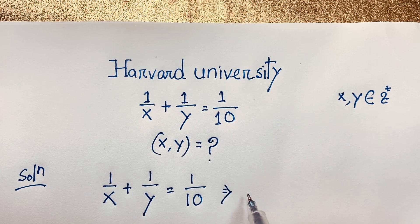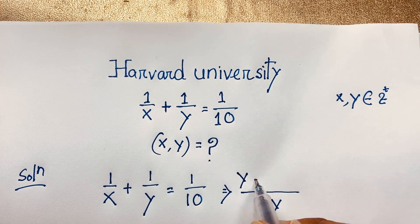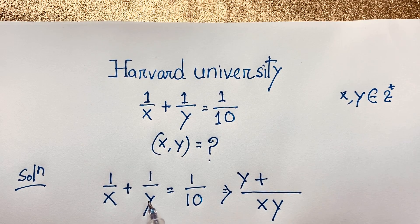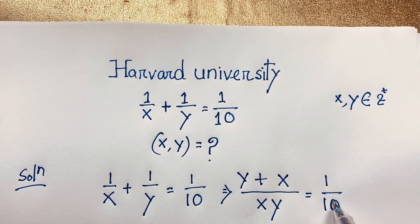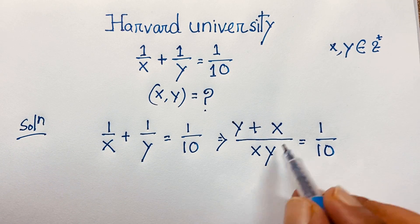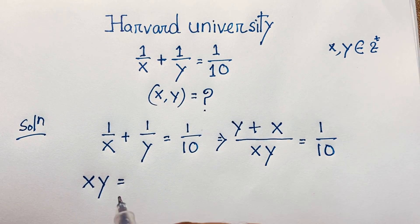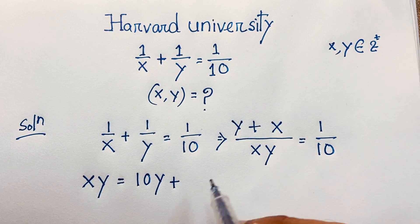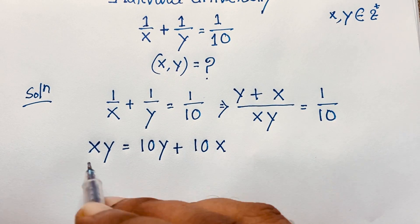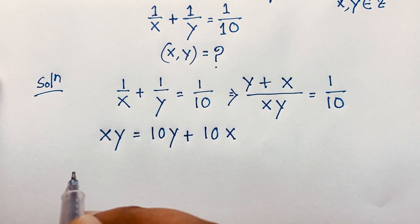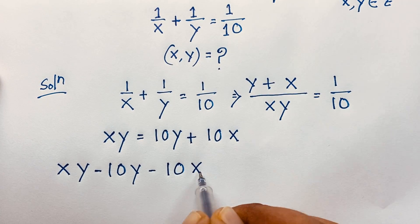Now you can see the least common denominator is xy. So xy divided by x gives y, and y times 1 is y. And xy divided by y gives x, and x times 1 is x, equal to 1 over 10. Cross-multiplying, xy times 1 is xy, and 10 times y is 10y, plus 10 times x is 10x. Moving everything to one side: xy minus 10y minus 10x equals 0.